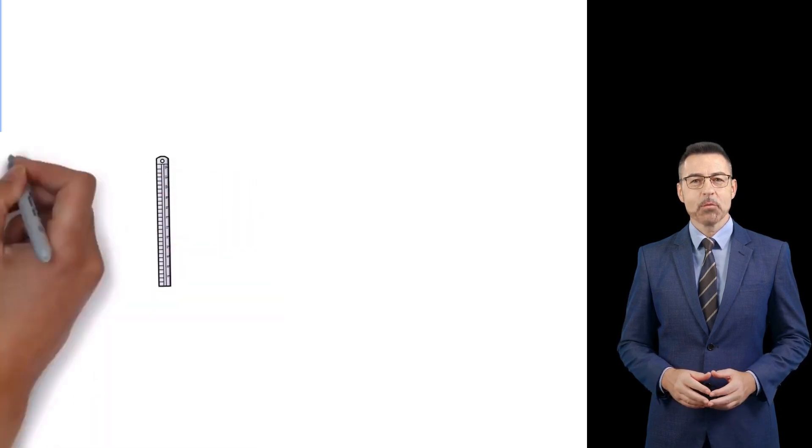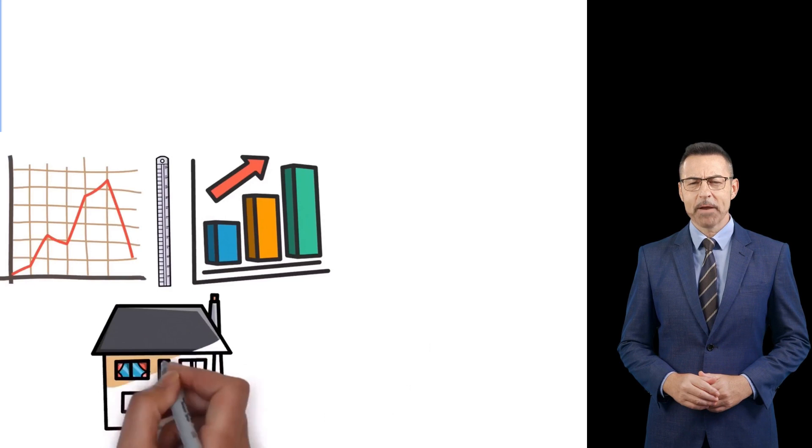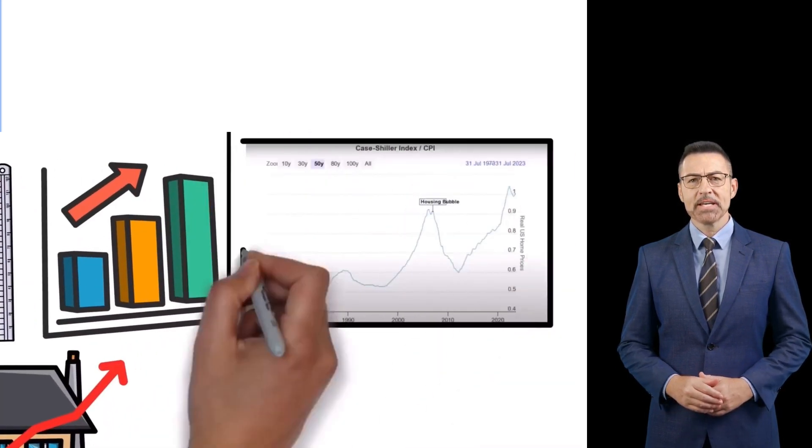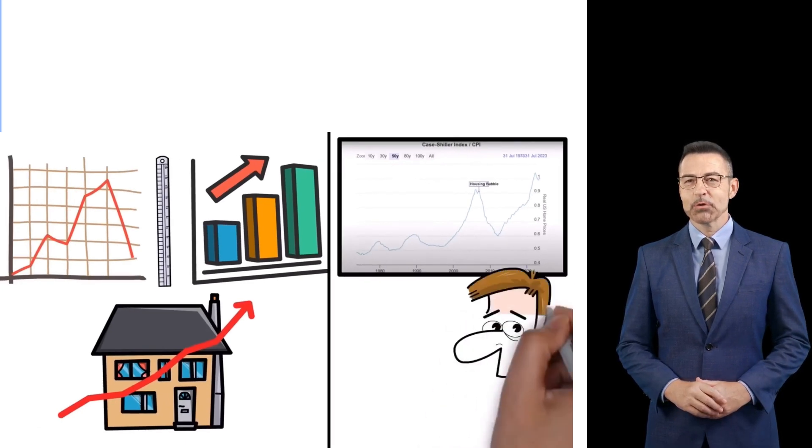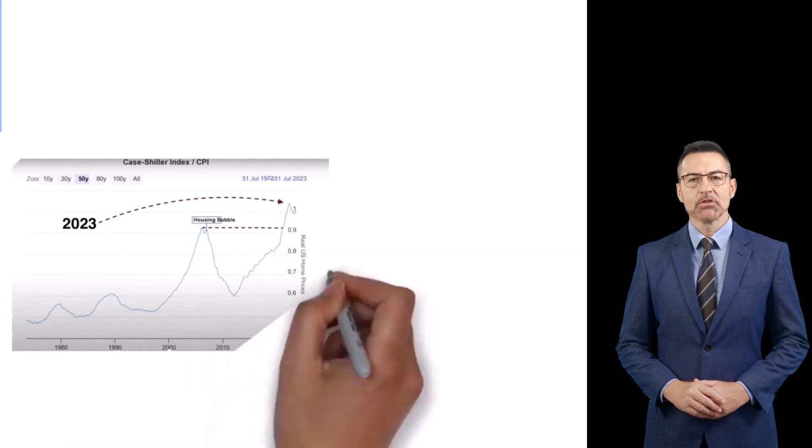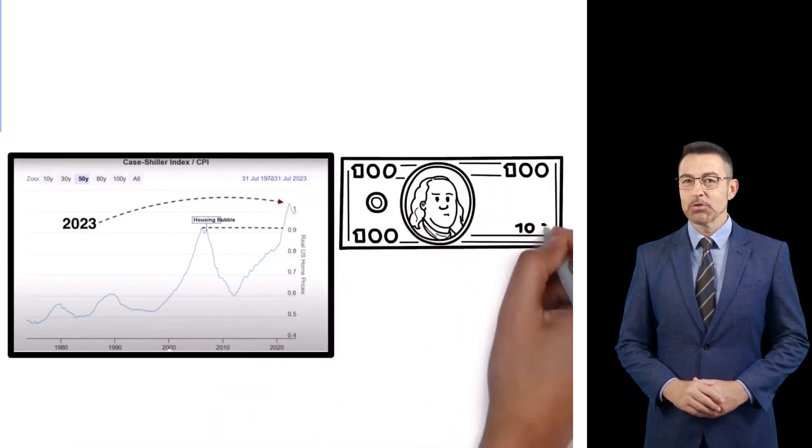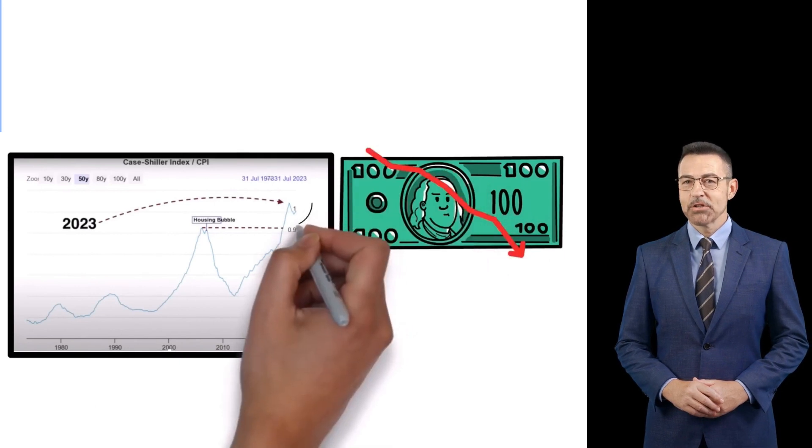So, in order to measure a bubble, we have to adjust for inflation and showcase how much home prices really went up. To do that, there is the inflation-adjusted Case-Shiller, which without boring you to death, shows real home prices. This chart will show us truly how home prices are overpriced, without the illusion of the falling dollar. And as you can see right now, we have surpassed the last bubble without the illusion of the falling dollar.